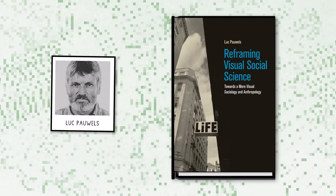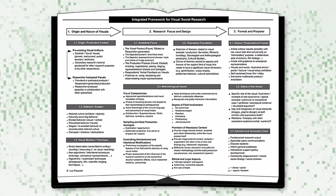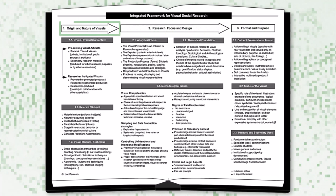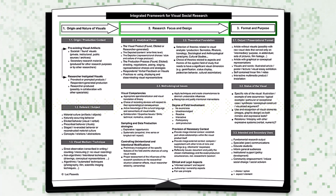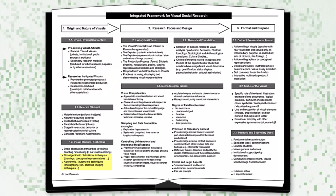Luke Powell's integrated framework for visual social research operates temporally and follows the trajectory of a visual research project from inception to completion. There are three themes: the origin and nature of visuals, the research focus and design, and the format and purpose of the end product. Concerning the origin and nature of visuals, it distinguishes pre-existing visual artifacts from researcher-instigated visuals and recognizes visual mediums as being non-algorithmic or algorithmic. Powell's framework is especially comprehensive.